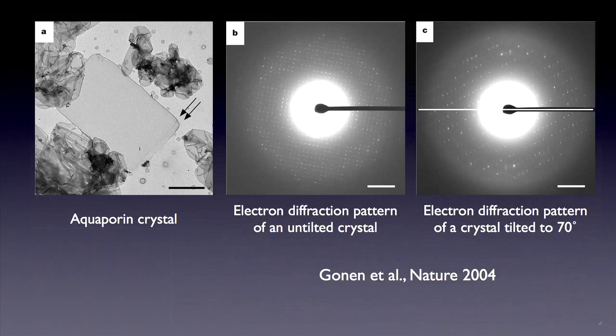Once a lot of diffraction patterns of an untilted crystal are recorded, the next step is to tilt lots of different crystals and record diffraction patterns in their tilted condition. Here's an electron diffraction pattern of one of the crystals tilted to 70 degrees. You still see the discrete spots, but notice that the spacing between these spots is much greater here than here. Because in the tilted position, we're sampling the lattice lines at an angle now.